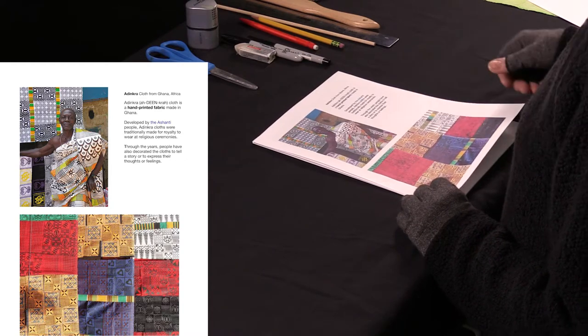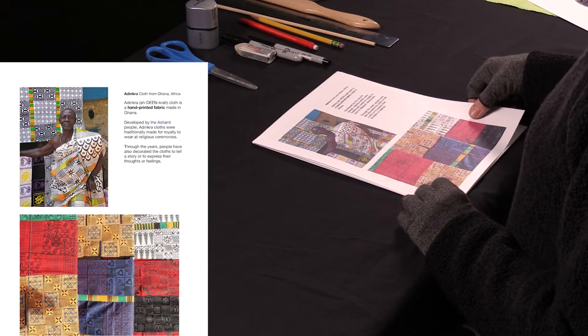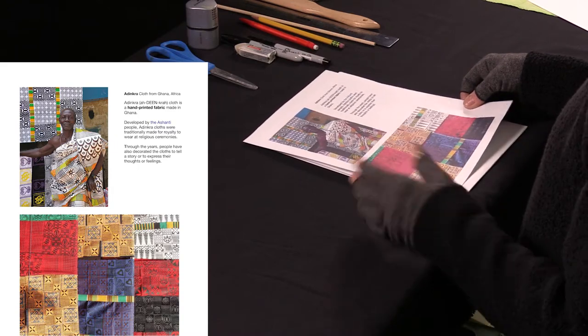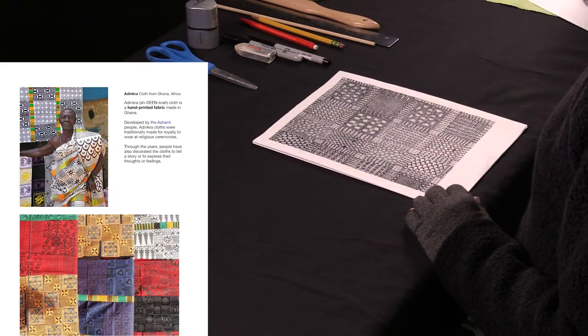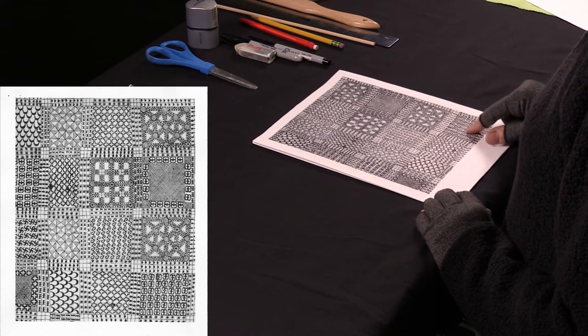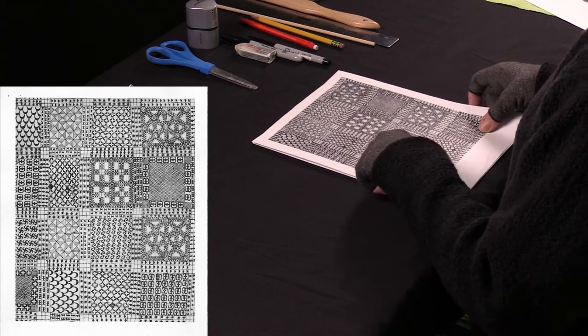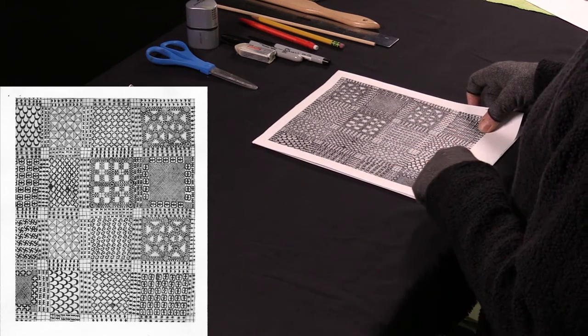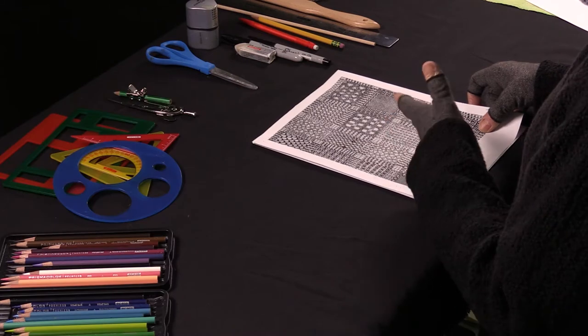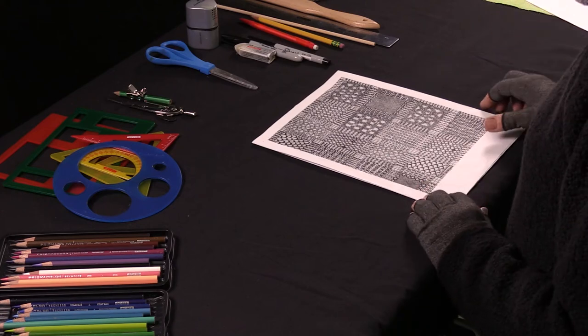Through the years, the people of Ghana have also decorated the cloths to tell a story or express their thoughts or feelings. Here's a black and white design with a whole bunch of different designs. Notice the geometrics in it, the repetition of the patterns, the rhythm and the movement. That's a really important thing in art.